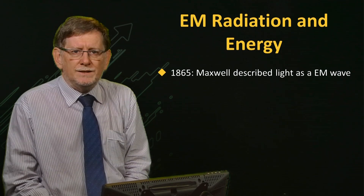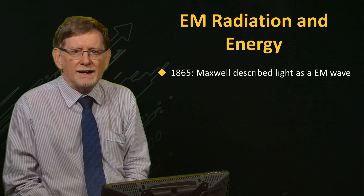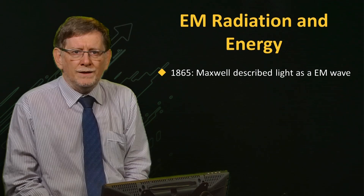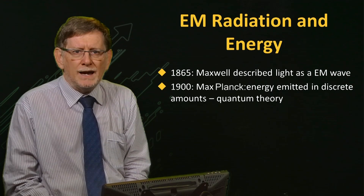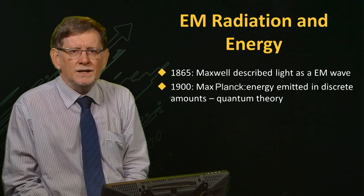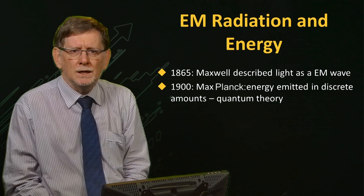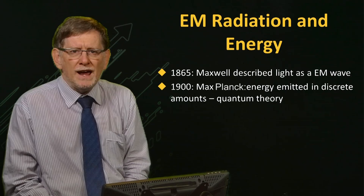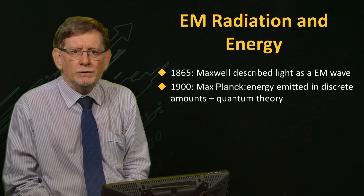In 1865, Maxwell published A Dynamical Theory of the Electromagnetic Field and discovered that light is a wave. In 1900, Max Planck proposed that the energy in light could only be emitted or absorbed in discrete amounts — that is, the energy of light is quantised; it is not done in random amounts. This was the beginning of what we now call quantum theory.